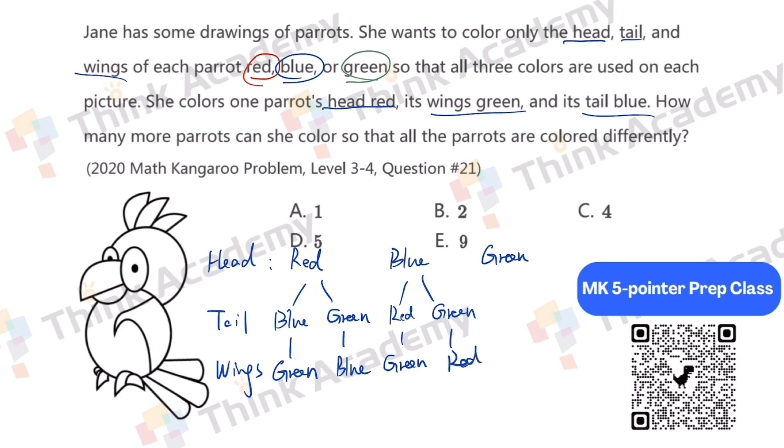Same for this one. Tail can be red or blue. And the wings are blue or red. But how many options are there?